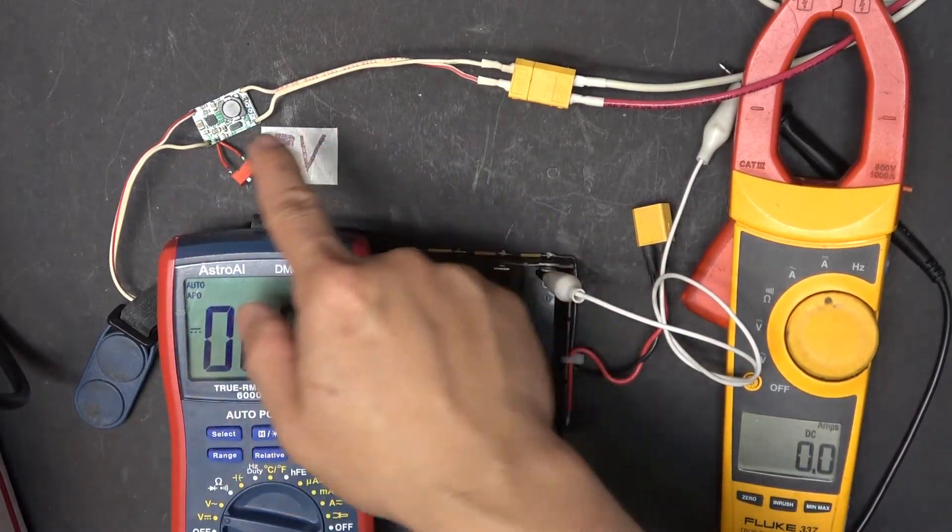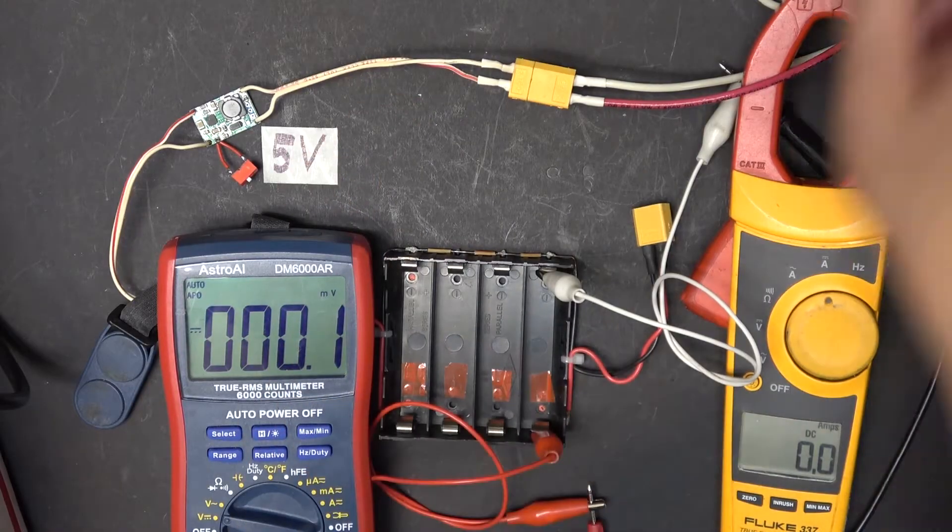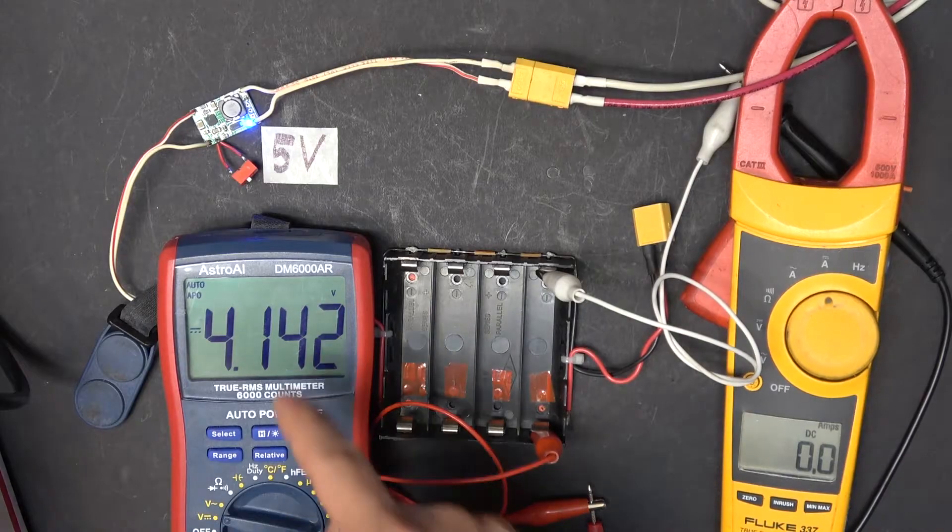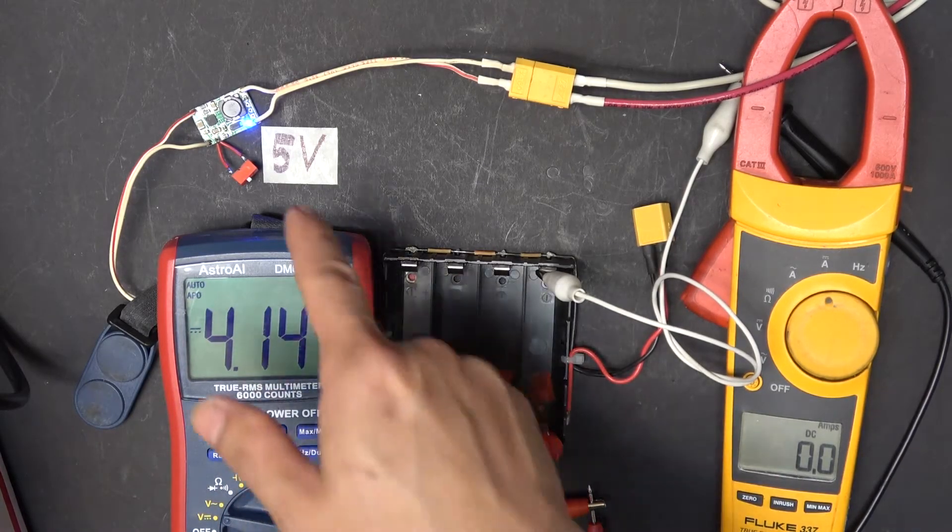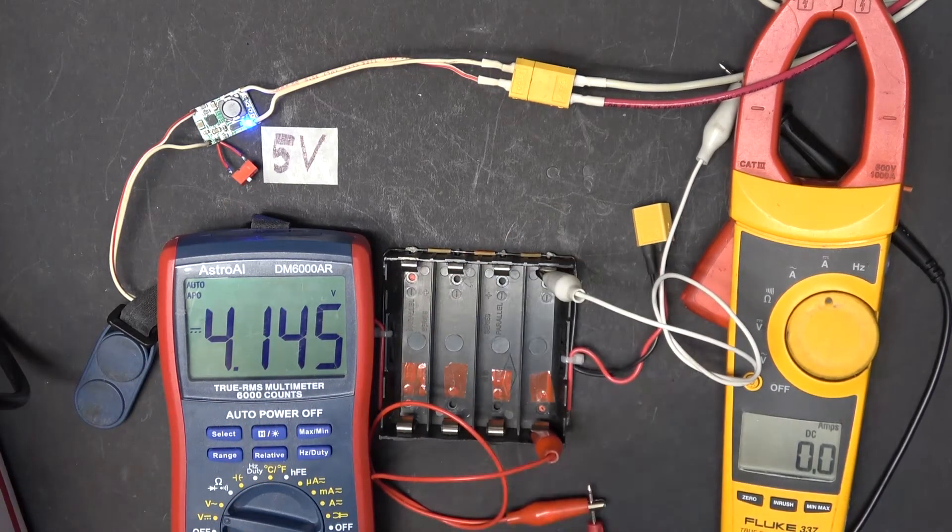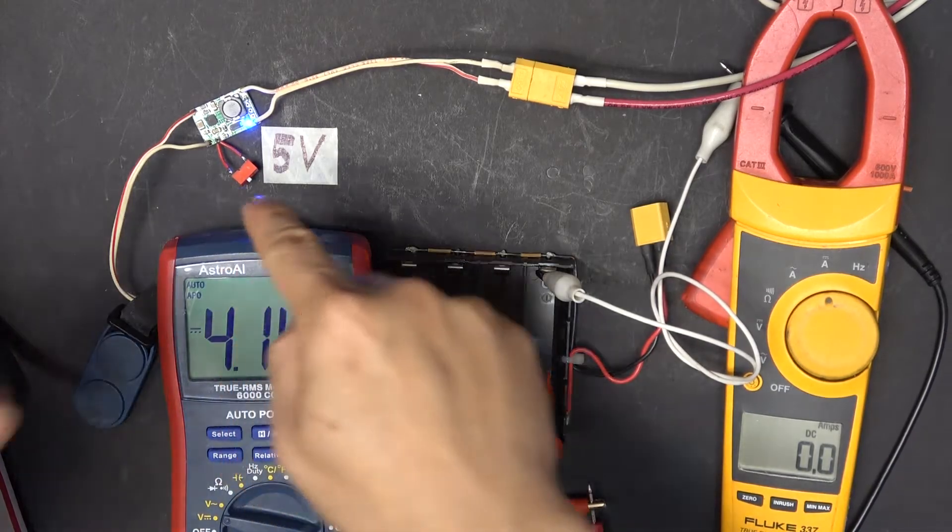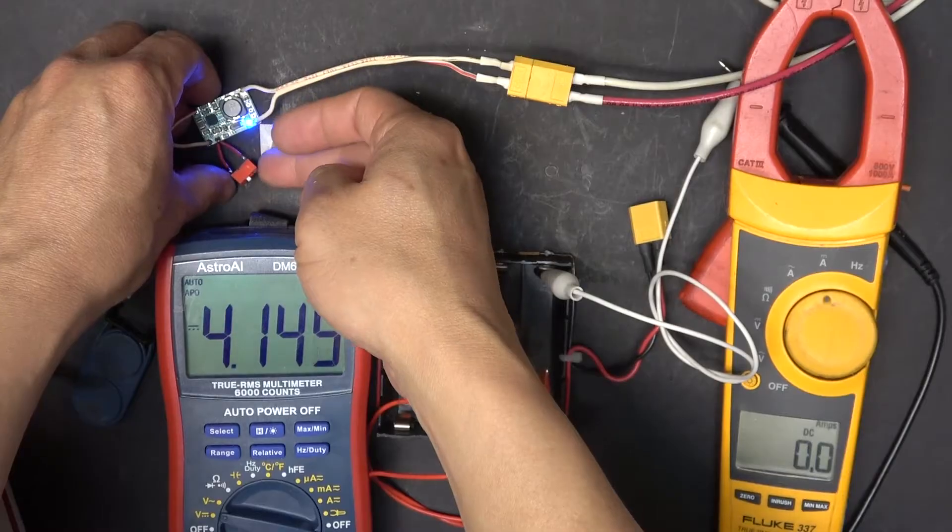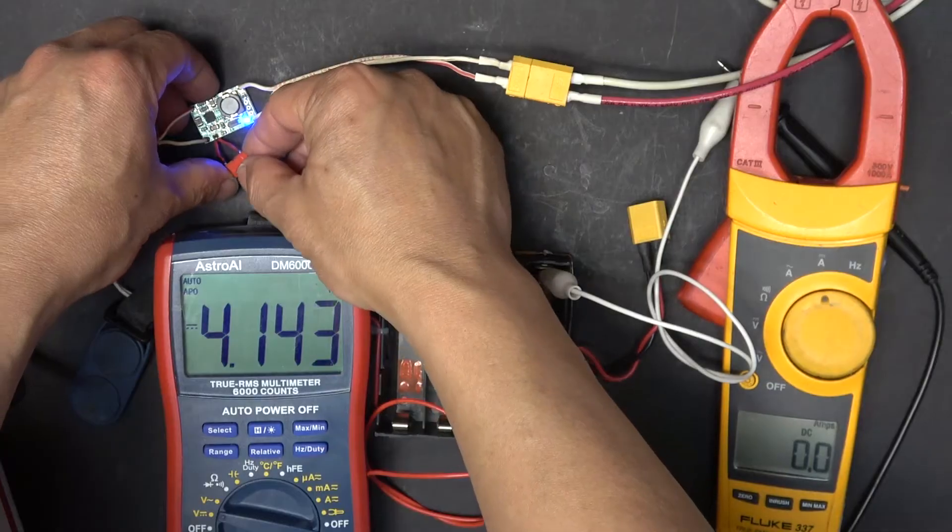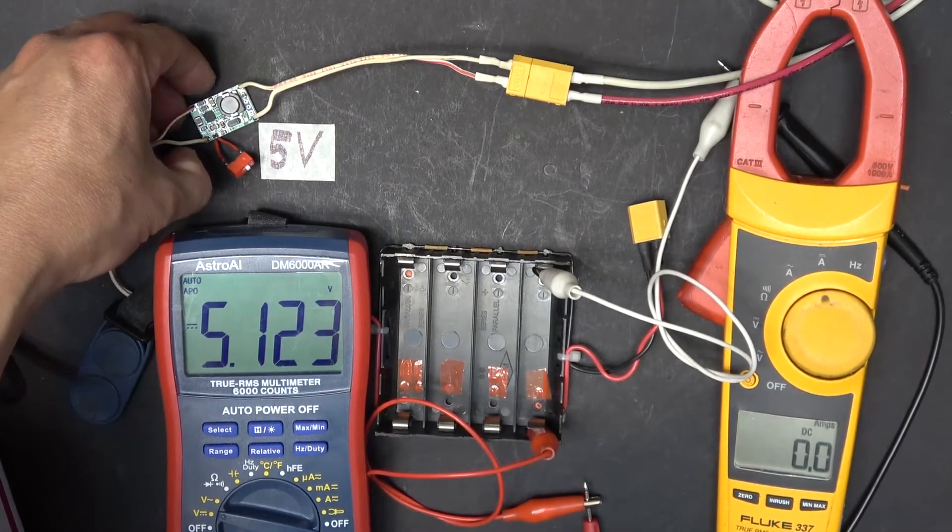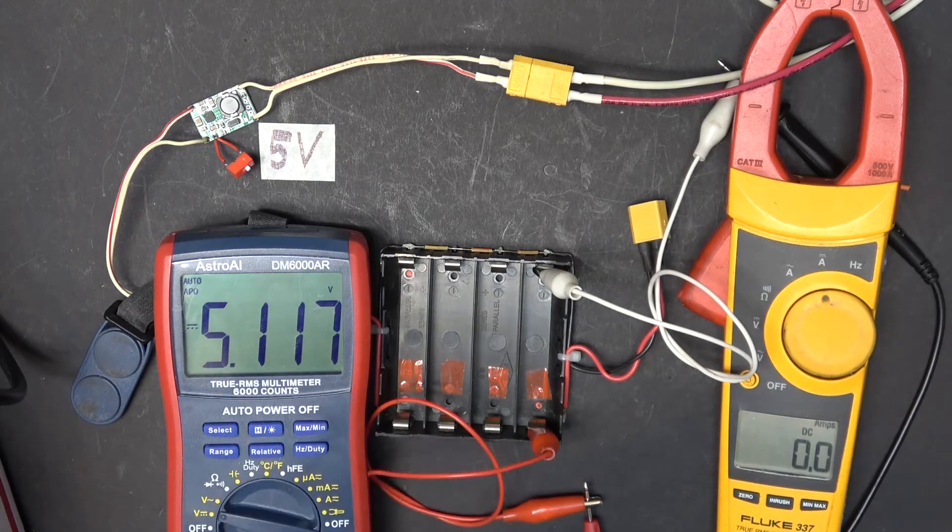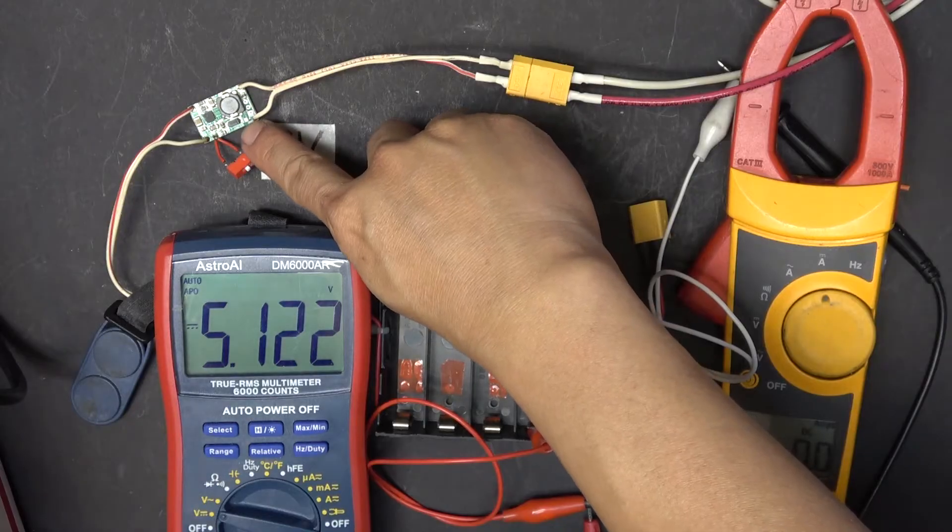I have connected the board to a 5 volt power supply input. Now let's turn the board on. You see the output is 4.1 volts and the light is blue. That's because it's not connected to a battery yet, so the charging current is zero. The switch is in the off position, that's why the output is 4.2 volts. Now if I turn the switch on, let's see what happens. The switch is on and the output is 5.1 volts, and the light is blinking red.